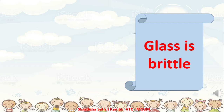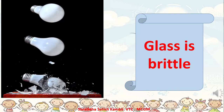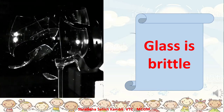Let us look at certain properties of glass. Properties means certain qualities of glass. Glass is brittle. Brittle means something which breaks very easily. Let us see whether glass can break. Yes, glass can break. See, this is a bulb. In case you happen to drop a bulb to the ground, what will happen? The bulb will get smashed up. And if you hit a glass like this, even that will break.